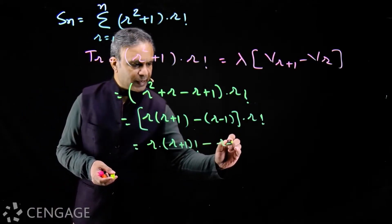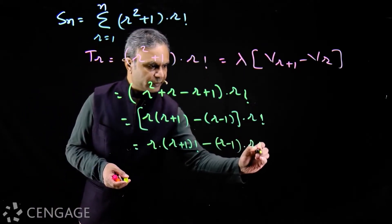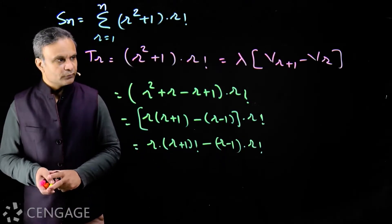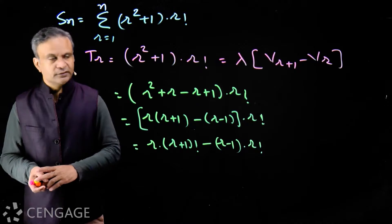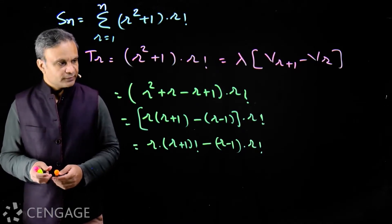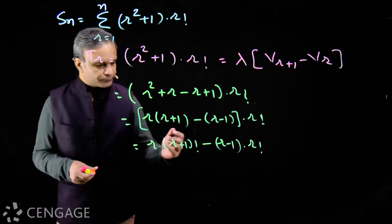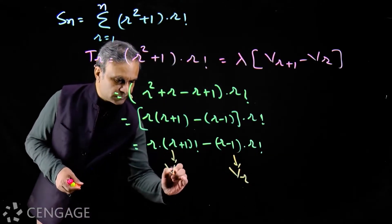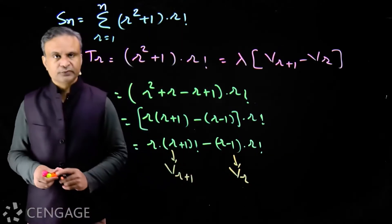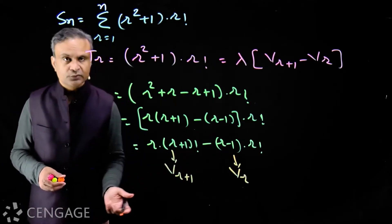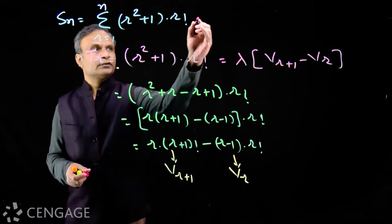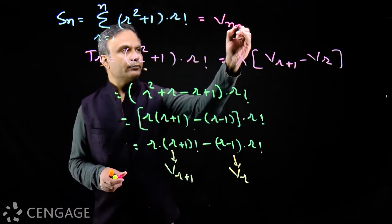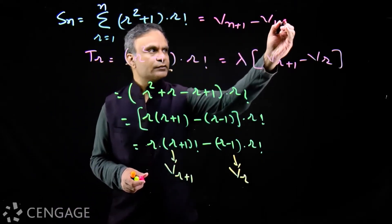So we have this minus (r − 1) multiplied by r factorial. We need to use some algebra here. If this expression is v(r), then definitely this other expression will be v(r+1).